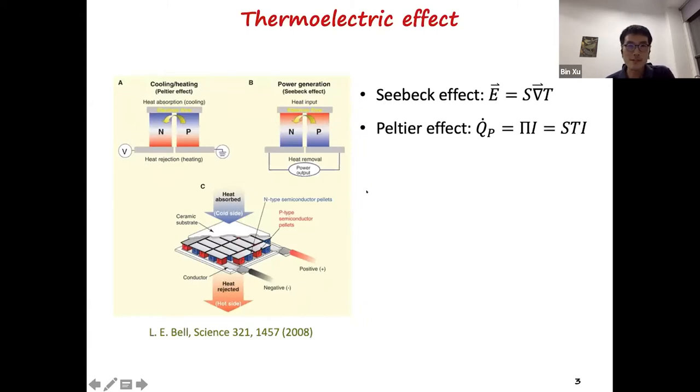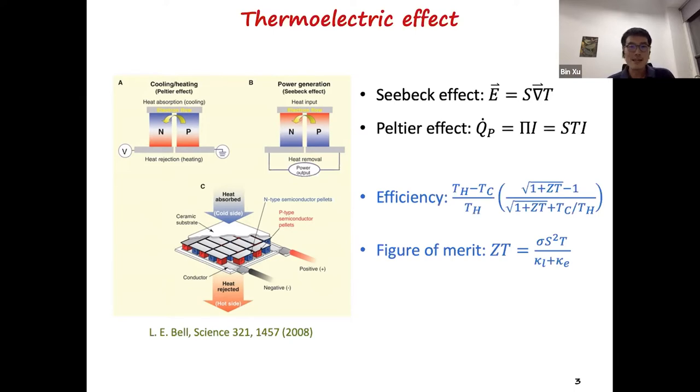Just a very brief introduction about the thermoelectric effect. There are two opposite effects. The Seebeck effect can convert the temperature gradient to an electric field. And the Peltier effect can convert the electric current into a heat current. The thermoelectric efficiency of a material is related to the temperatures of the hot side and cold side, as well as a material dependent quantity called the figure of merit, ZT, which is defined as the electric conductivity times sigma square times temperature divided by the total thermal conductivity, including the contributions from the lattice and the electrons.